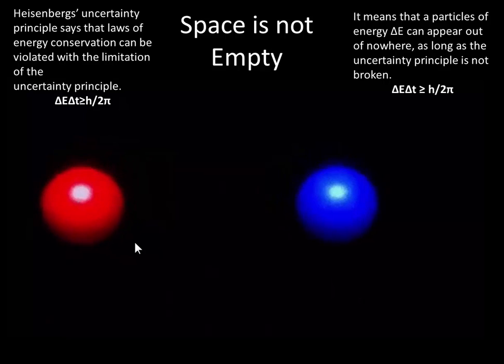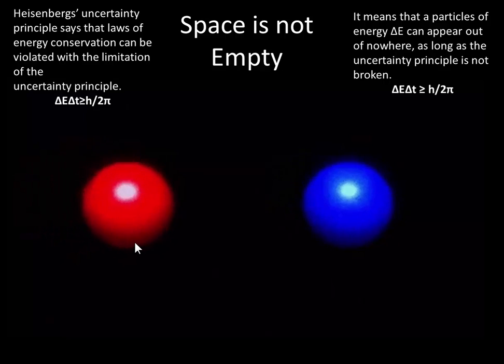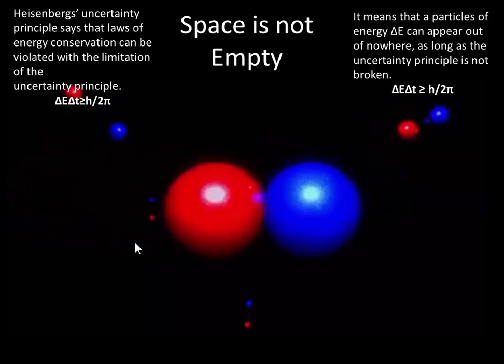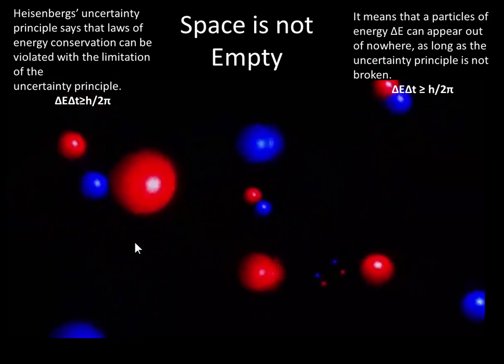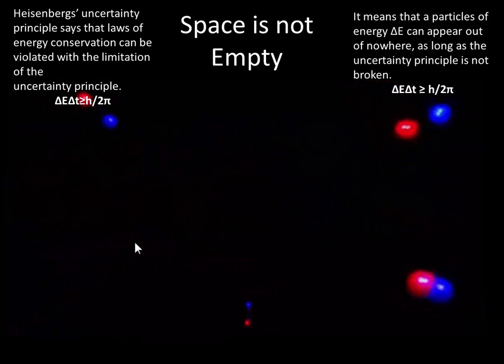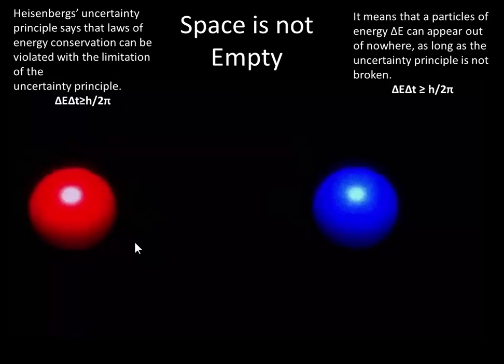Then you have these two particles appearing, an electron and an anti-electron. Then they come back together again and annihilate each other. It happens very quickly, but it happens all the time. Space is full of these particles which are appearing and disappearing. But it happens so quickly that nobody is able to observe it.